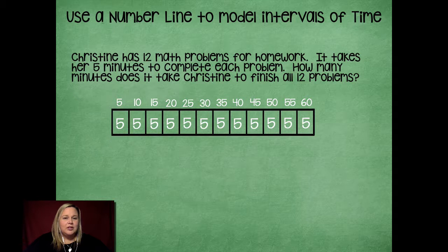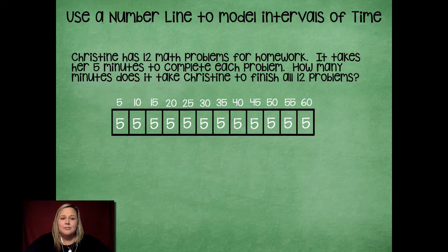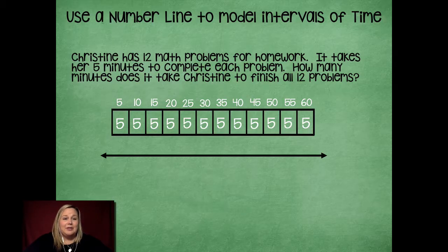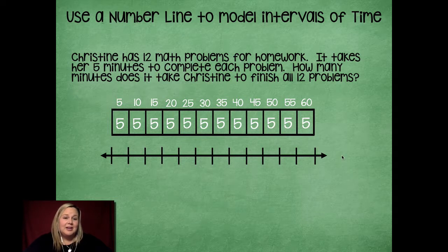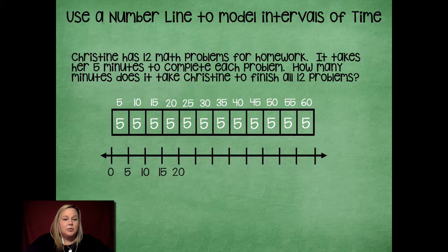Now we're going to take what we know with tape diagrams and transfer that knowledge to using a number line to model these intervals of time. I'm going to draw my number line right underneath the tape diagram and represent the same lines. Notice how they line up nice and neat. I'm going to label those: zero minutes, five minutes, ten minutes, fifteen, twenty, twenty-five, thirty...